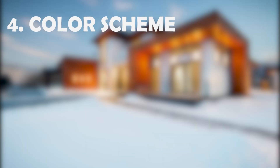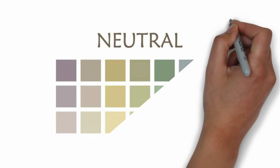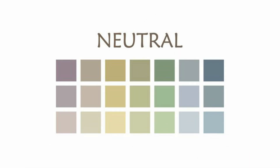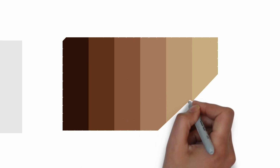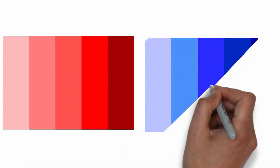Update your color scheme. Modern design often features a neutral color palette with pops of bold color for emphasis. Consider updating your exterior color scheme to include shades of gray, white, black or beige. You can also incorporate bright, bold accents like red or blue.